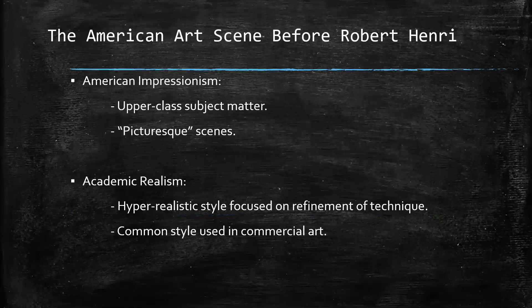The American art scene was dominated by American Impressionism, which focused on very upper-class subject matter — upper-class individuals doing upper-class things in very picturesque settings. Academic Realism was a hyper-realistic style that focused on refinement of technique and was commonly used in commercial art.